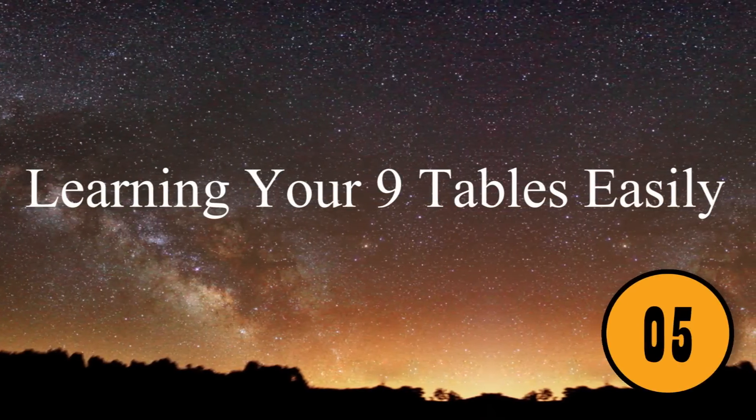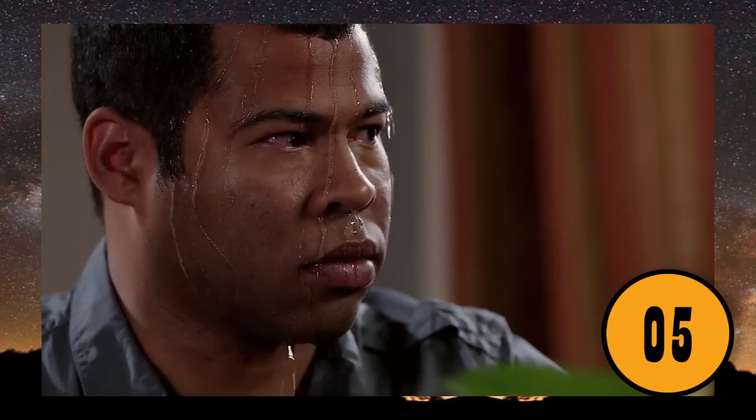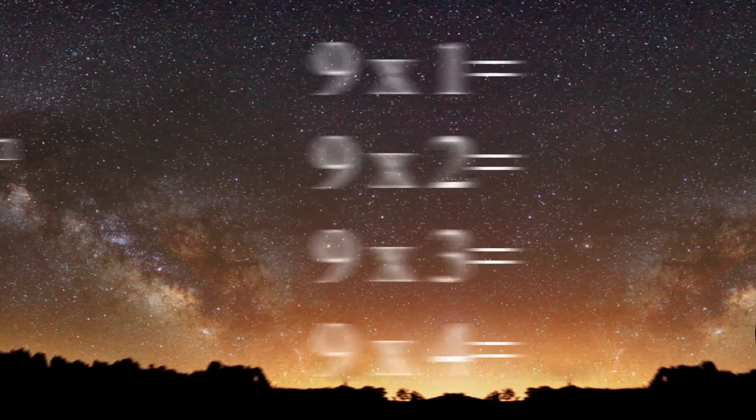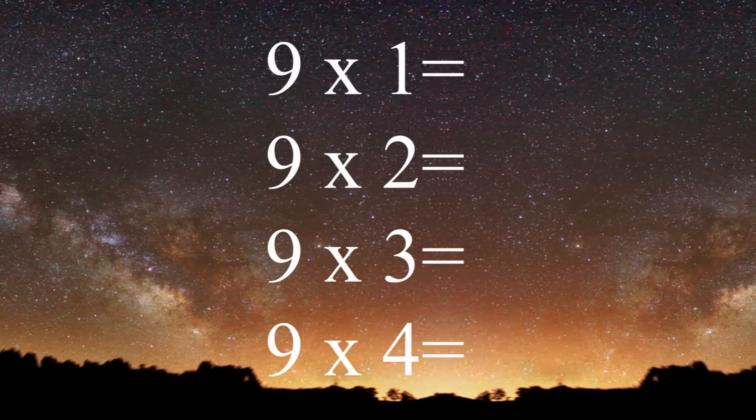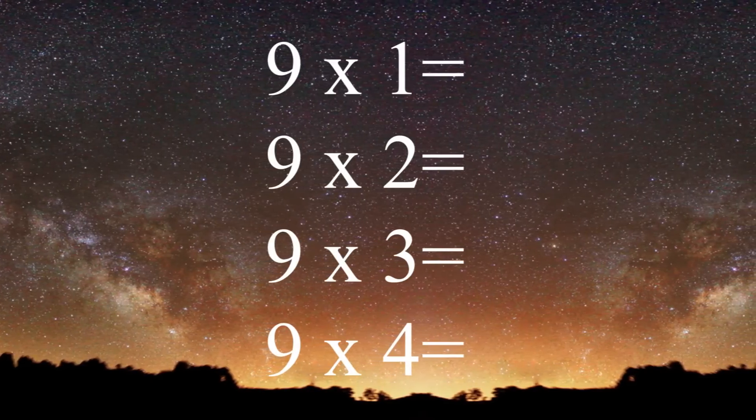5. Learning your 9 tables easily. Your 9 tables don't need to be as hard as you might think. Start by writing the multiplication problems in a row. For example, 9 times 1 equals, 9 times 2 equals, 9 times 3 equals, 9 times 4 equals, and so on.